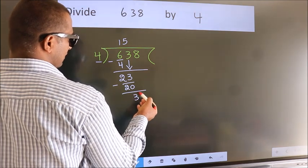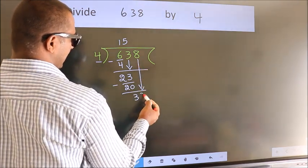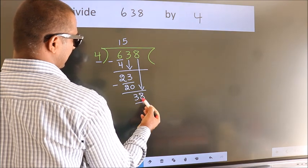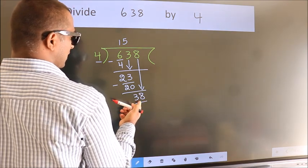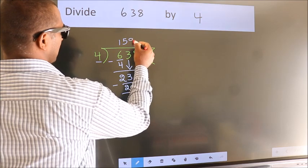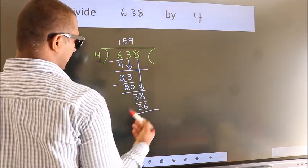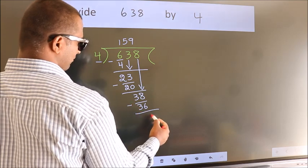After this, bring down the next number, so 8 down, making 38. A number close to 38 in the 4 table is 4 times 9 equals 36. Now we subtract and get 2.